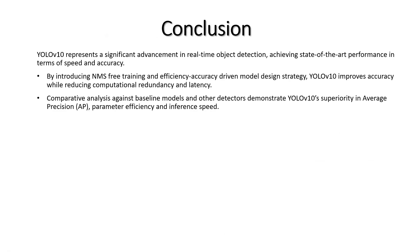In conclusion, YOLO V10 represents a significant advancement in real-time object detection, achieving state-of-the-art performance in terms of speed and accuracy. YOLO V10 introduces NMS-free training and an efficiency-accuracy driven model design strategy, optimizing various model components to reduce parameters and get more accurate results. Comparative analysis against baseline models like YOLO V8 and YOLO V7 demonstrates YOLO V10's superior performance in average precision, parameter efficiency, and inference speed.